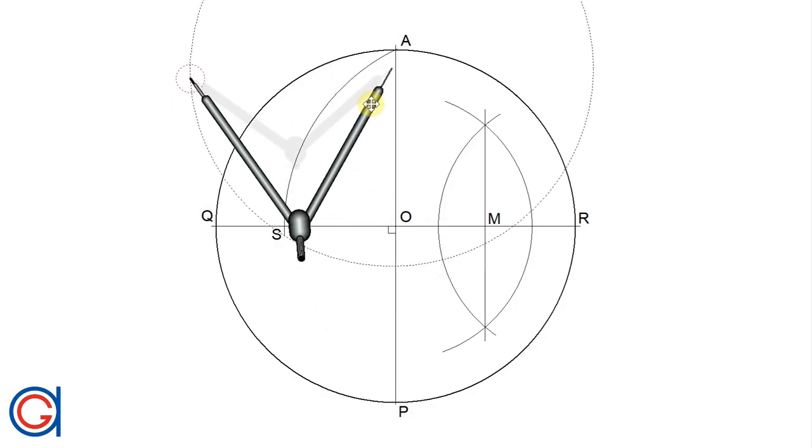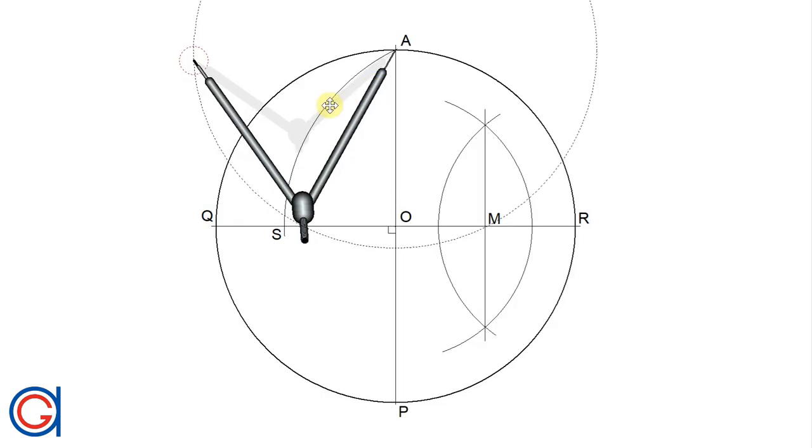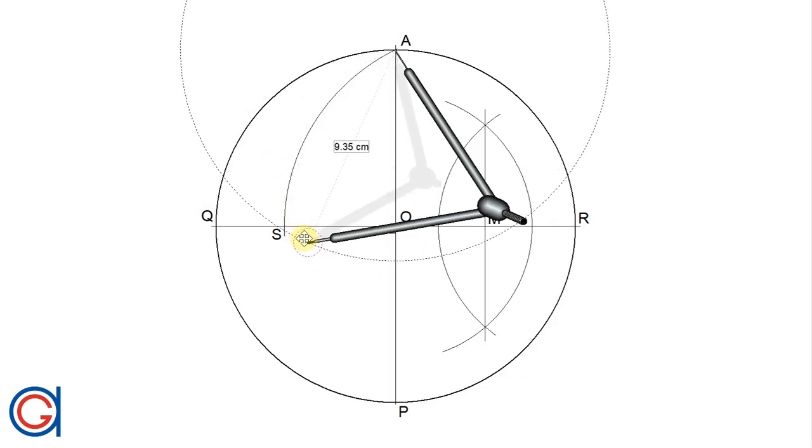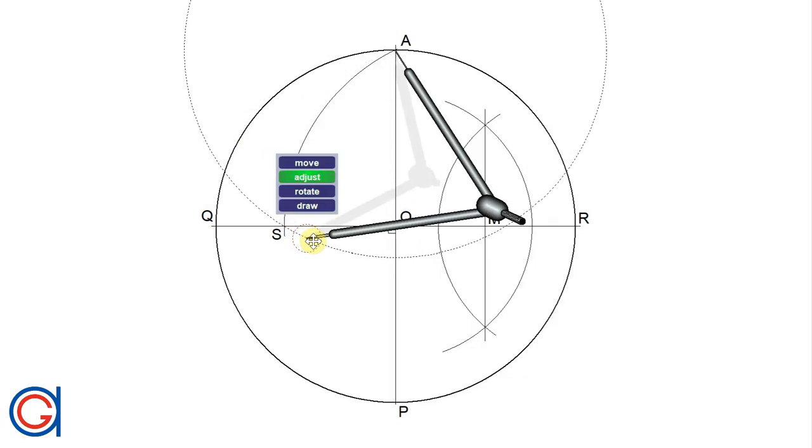So the length AS will be the length which divides our circumference into five equal parts. The next step is with our compass, we want to transport this distance onto our circumference five times, starting at point A.